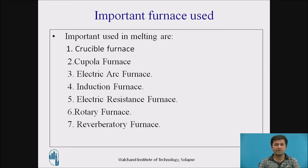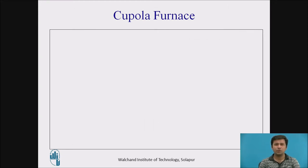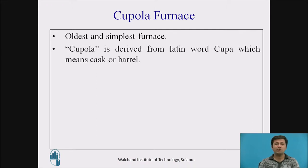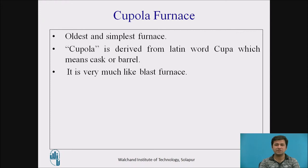The cupola furnace is the oldest and very simple kind of furnace used for melting, specifically cast iron. The word 'cupola' is derived from the Latin word 'cupa', which means cask or barrel. It is very much like a glass furnace and is used to melt cast iron and steel both.